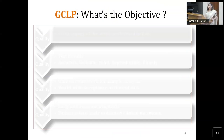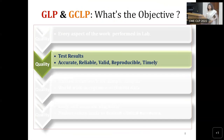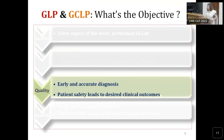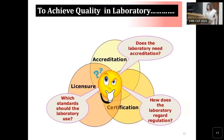The objective of GCLP — why Good Clinical Laboratory Practices are important — is ultimately to achieve quality and competence in the laboratory. Every aspect of the work performed in the lab should have quality so that we get accurate, reliable, and valid results, which leads to early diagnosis, patient safety, and desired clinical outcomes. And if that is achieved, it will be accepted worldwide.